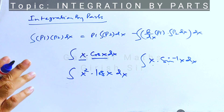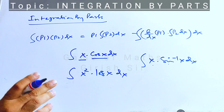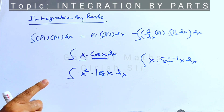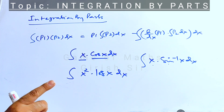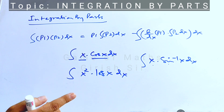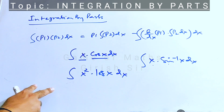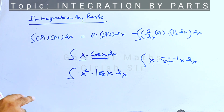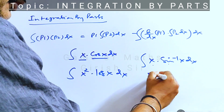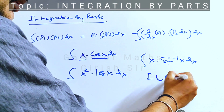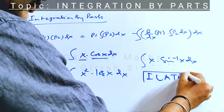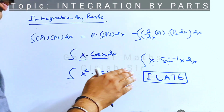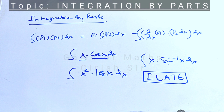In this method, it's important that you carefully select part one and part two from the given product. There is a preference order for selecting part one.